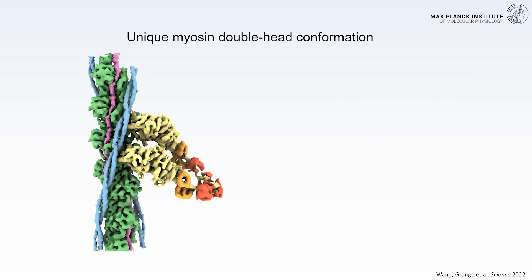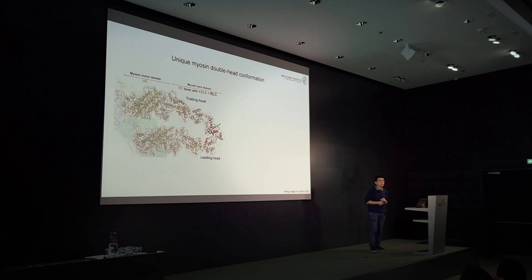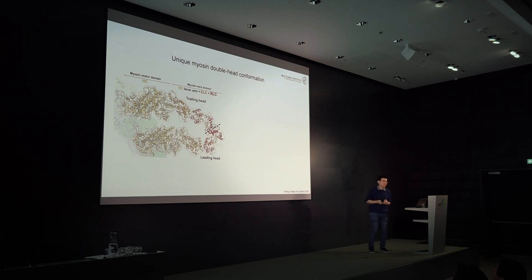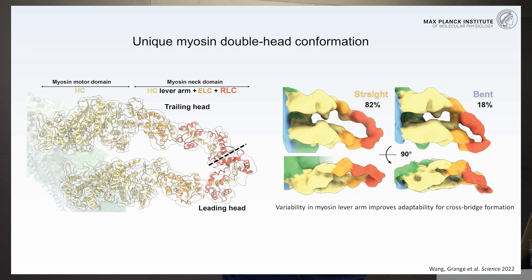The beauty of in-situ structure determination is that although we focused on nebulin, we can also solve the structure of its neighbors — in this case, the myosin double head. As mentioned, they prefer to form this double-head conformation, which is unique and hasn't been identified in vitro. The structure of the myosin double head shows a different conformation in the lever arm region, or neck domain, that accommodates simultaneous binding to the thin filament. Additionally, there is variability in the overall shape of the lever arm region, improving adaptability for cross-bridge formation between thin and thick filaments.